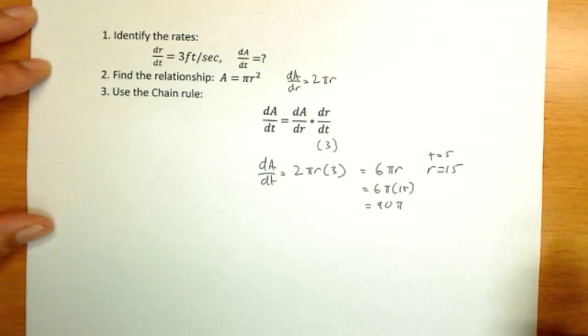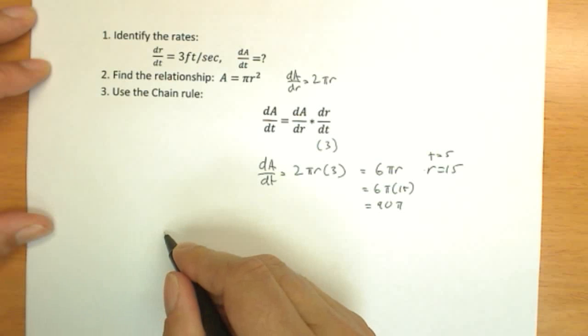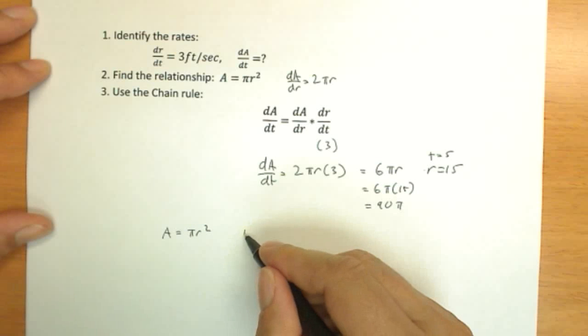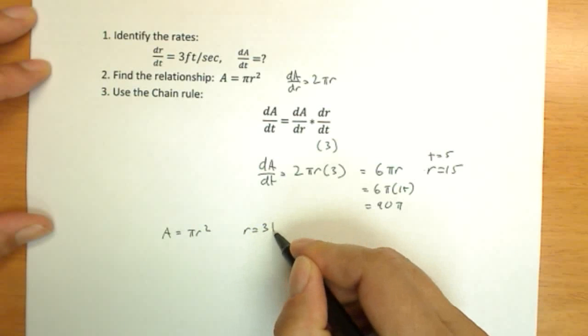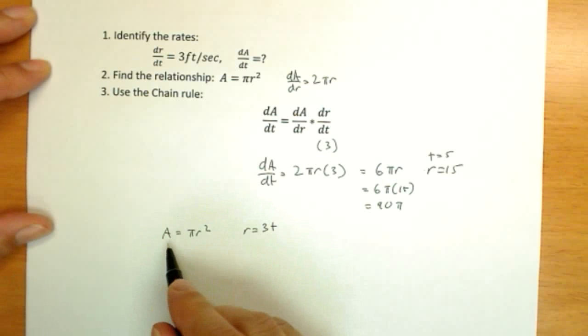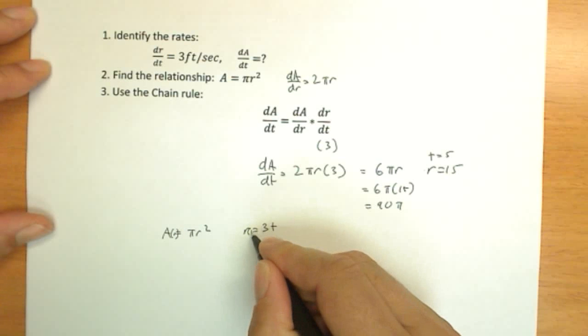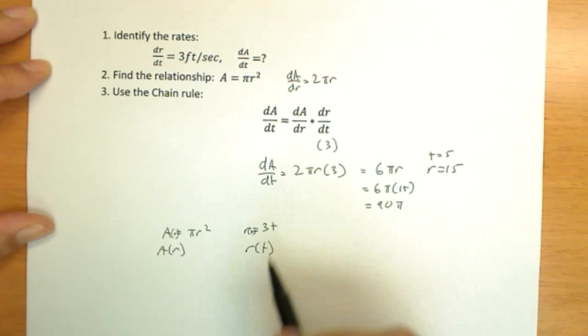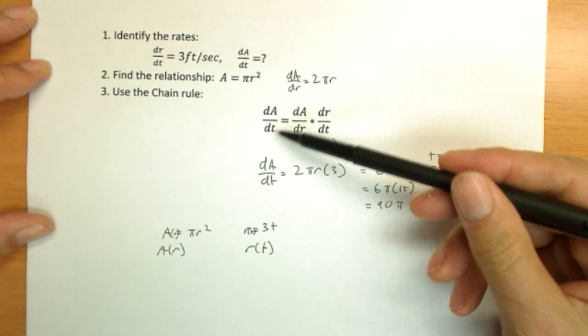And there actually, on many of these, there's actually another way to do it. We could simply take our A function, pi r squared, and our r function, r equals 3 times t, and we could use a composition of functions to make one new function. This is A as a function of r, and this is r as a function of t. So I have A as a function of r, r as a function of t, and I'm interested in finding dA/dt.